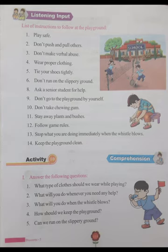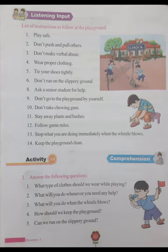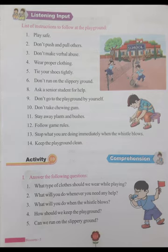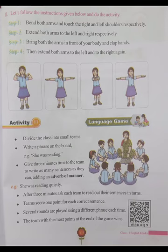Activity 10: Comprehension. 1. What type of clothes should we wear while playing? Answer: We should wear track suits and loose clothes while playing. 2. What will you do whenever you need any help? Answer: Whenever I need any help I'll ask a senior student for help. 3. What will you do when the whistle blows? Answer: I'll stop what I am doing when the whistle blows. 4. How should we keep the playground? Answer: We should keep the playground clean. 5. Can we run on slippery ground? Answer: No, we cannot run on slippery ground.